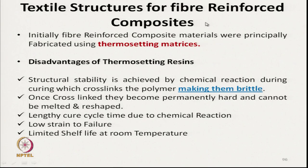Initially, fiber reinforced composite materials were principally fabricated using thermosetting matrices. The main disadvantages of thermosetting resins are that structural stability is achieved by chemical reaction during curing, which is crosslinking of the polymer. This makes the matrix brittle, and the transformation is permanent. Other disadvantages include lengthy curing cycle, low strain to failure, and limited shelf life at room temperature.